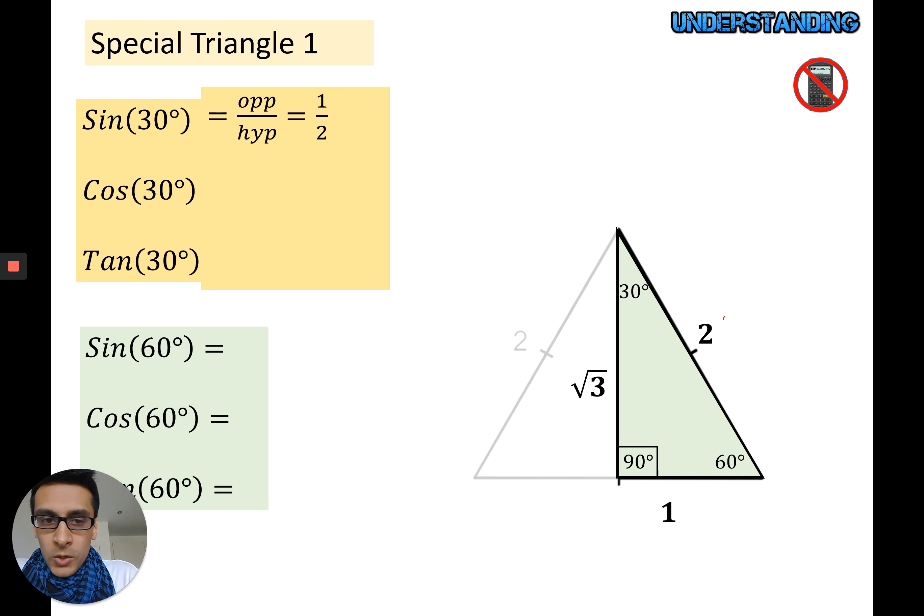I can also work out cos 30. Cos is adjacent over hypotenuse, so it's going to be root 3 over 2. And then tan 30, you can probably do that in your head. It's going to be opposite over adjacent. You get 1 over root 3.